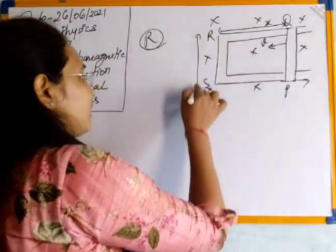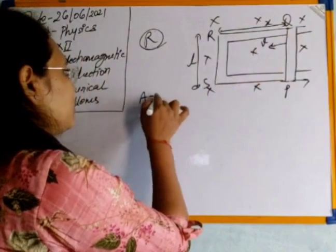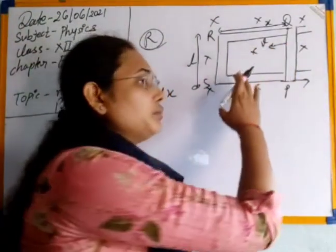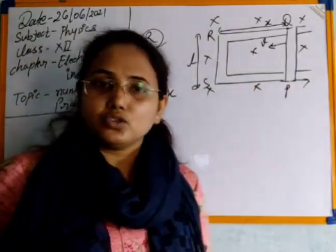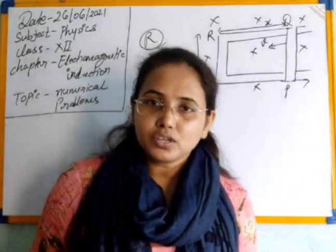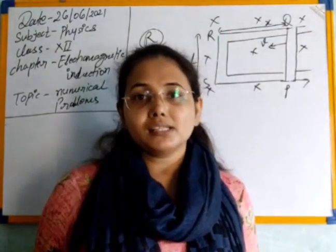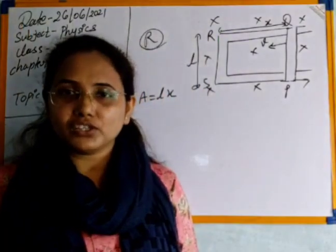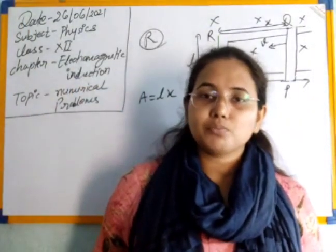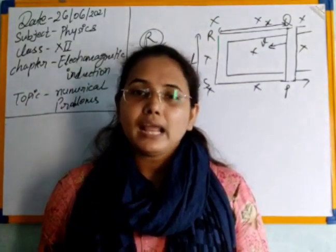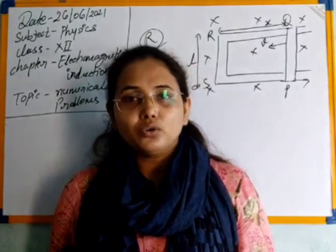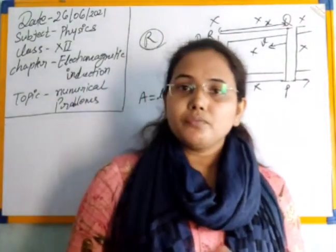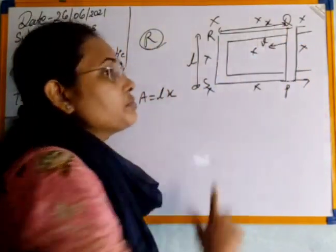As x changes continuously due to the movement of arm PQ, the area changes continuously. Due to change in area, flux phi changes. Whenever flux changes, we get an induced EMF, and with resistance we can obtain current. There are two methods to solve such questions: first using Faraday's concept, and second using the Lorentz concept. Since we have to derive the force also, I will use the Lorentz concept.